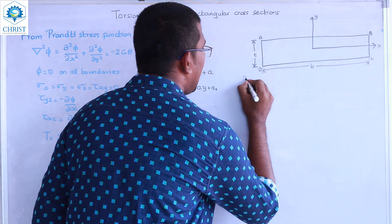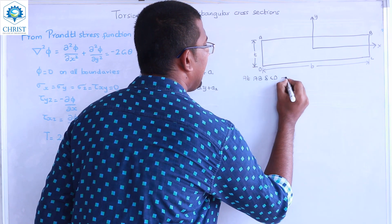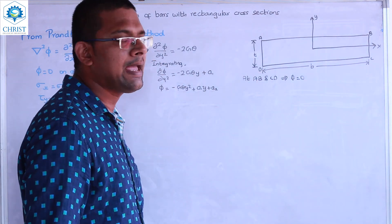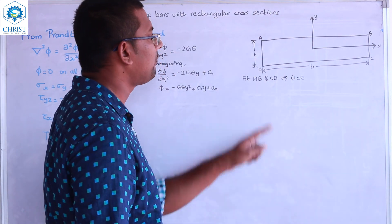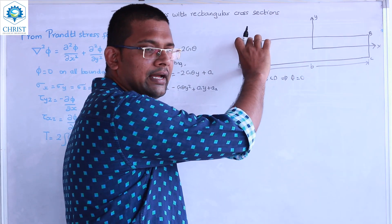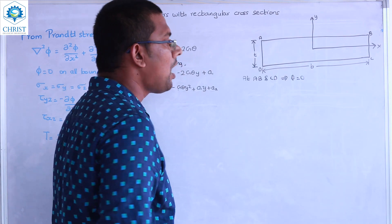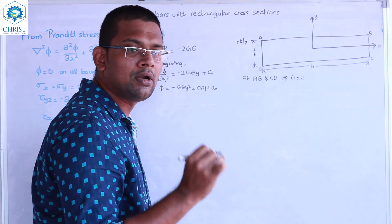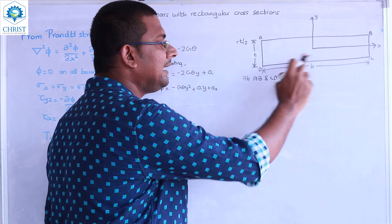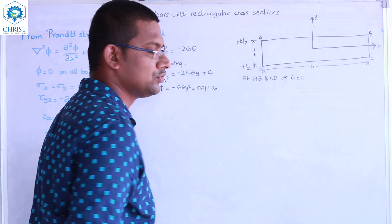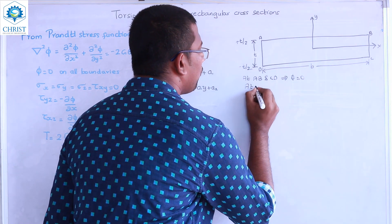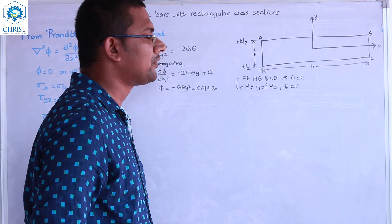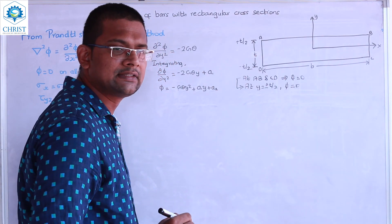I am selecting boundaries AB and CD. The total thickness T means boundary AB is at y = +T/2 and boundary CD is at y = −T/2. Applying the boundary condition φ = 0 at y = +T/2 and at y = −T/2 gives us two equations.